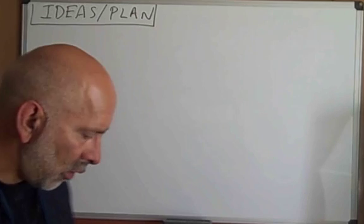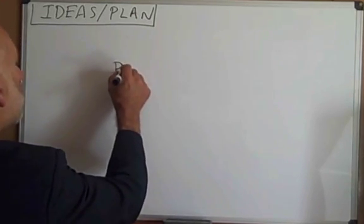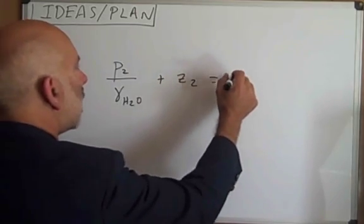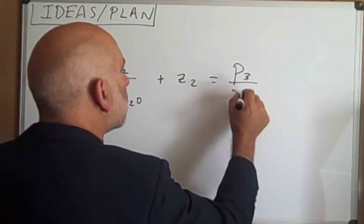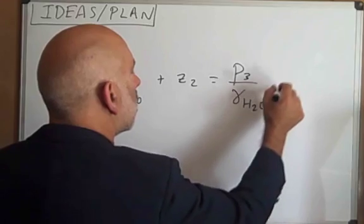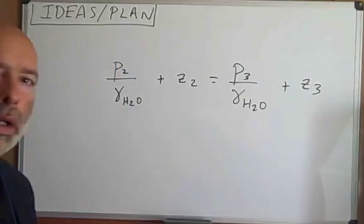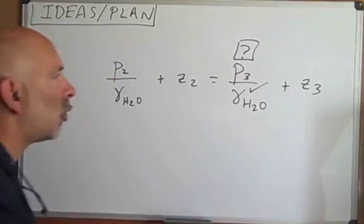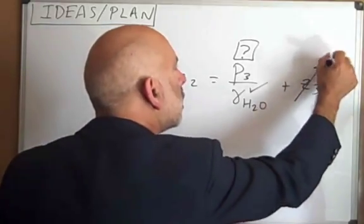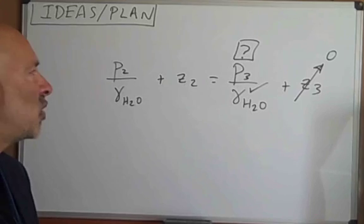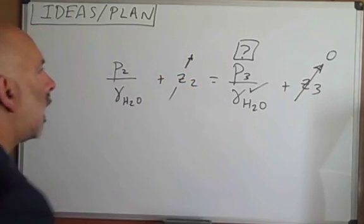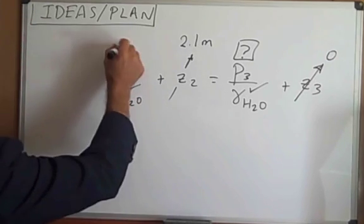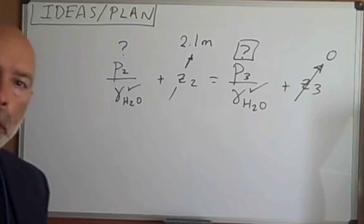Let's write the hydrostatic equation for the water. We have P2 over specific weight of water plus Z2 is equal to P3 over specific weight of water plus Z3. Term-by-term analysis, P3 right here is our goal. Specific weight of water we've already looked up. Z3 is zero because that's where we situated our datum. Elevation 2, Z2, is 2.1 meters. Specific weight of water is known, but we do not know the pressure at elevation 2.